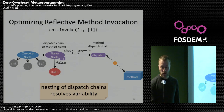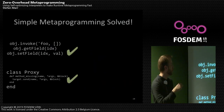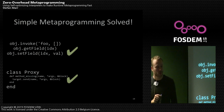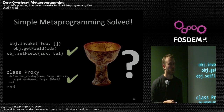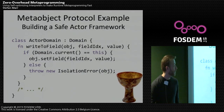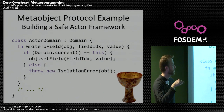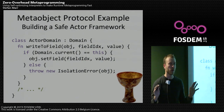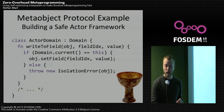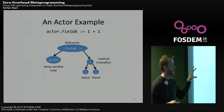That solves those two categories — simple reflective access — and also the combination of does-not-understand and perform. Now the question is what do we do with what I was actually interested in: the fancy meta-object protocols. We have a meta-object protocol cross-cutting the whole application, so we want to change every single field write.